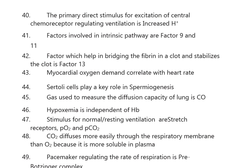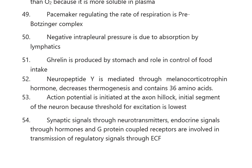Carbon dioxide diffuses more easily through the respiratory membrane than oxygen because it is more soluble in plasma. The pacemaker regulating the rate of respiration is the pre-Bötzinger complex. Negative intrapleural pressure is due to absorption by lymphatics. Ghrelin is produced by the stomach and has a role in control of food intake. Neuropeptide Y is mediated through melanocortin hormone, decreases thermogenesis, and contains 36 amino acids.